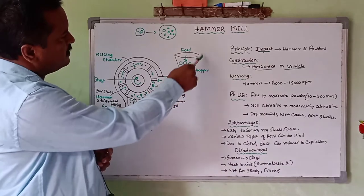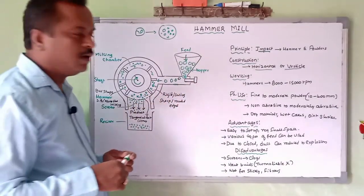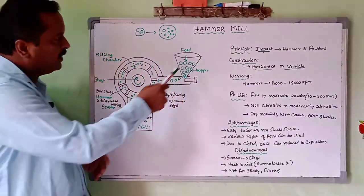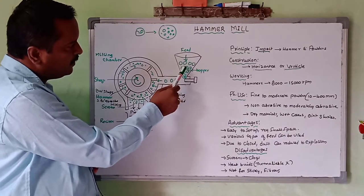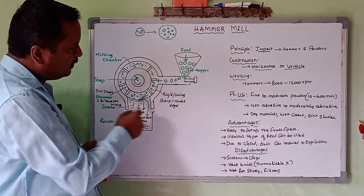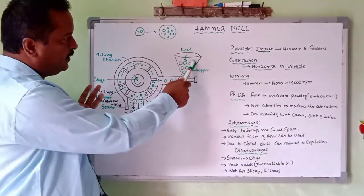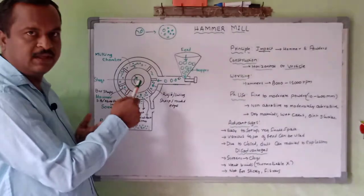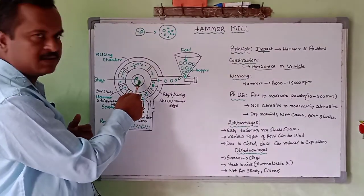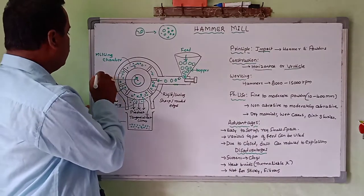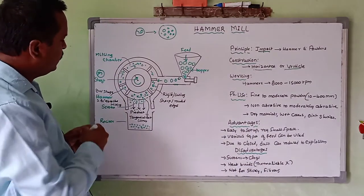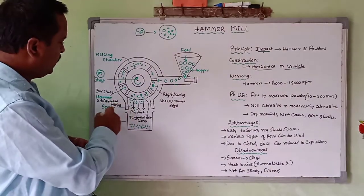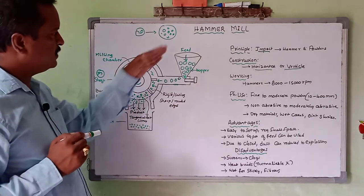The feeding part is the hopper, where material to be size-reduced is placed. This feed enters into the milling chamber. The major components are: the feed inlet, the milling chamber, and the hammers. The hammers are connected to a shaft, and this shaft is rotated with the help of a motor. The bar-shaped hammers rotate inside the chamber, followed by the screen and the receiver.